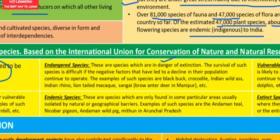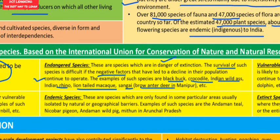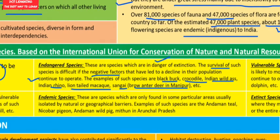Endangered species are those in danger of extinction. If the negative factors that have led to a decline in their population continue to operate, their survival becomes difficult. Examples include the black buck, crocodile, Indian wild ass, Indian rhinoceros, lion-tailed macaque, and Sangai — the brow-antlered deer of Manipur.